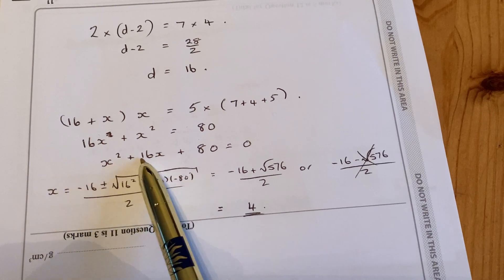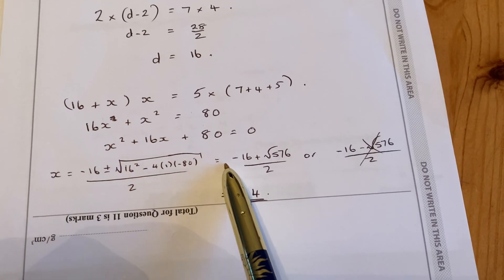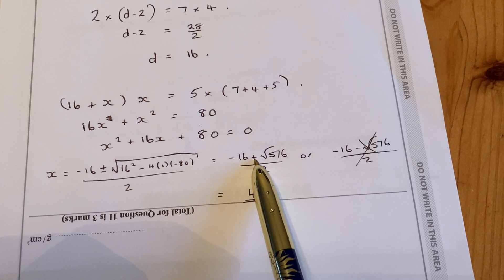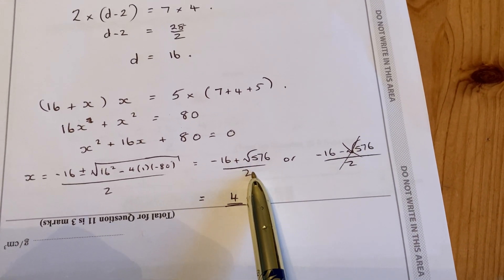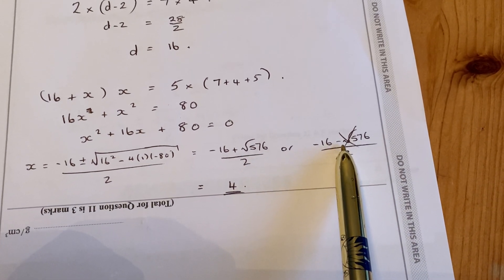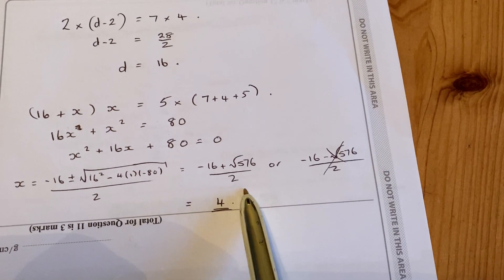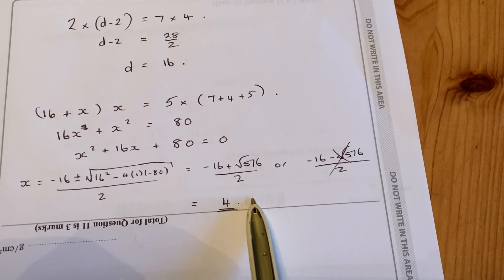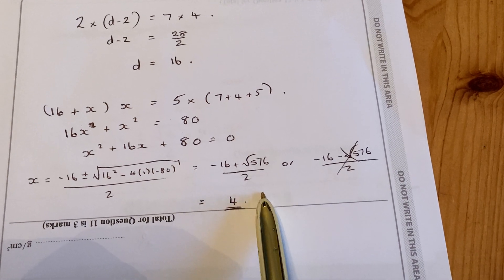So A would be 1, B would be 16, and C would be 80. You end up with minus 16 plus or minus the square root of 576 over 2. If you took the minus version, you would end up with a minus x, which obviously isn't true for the diagram because you have to have the plus x number. So when you simplify it, x is going to be 4.